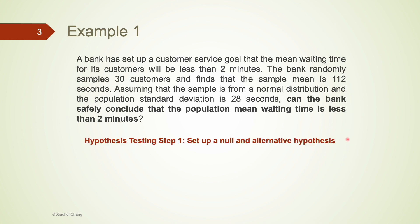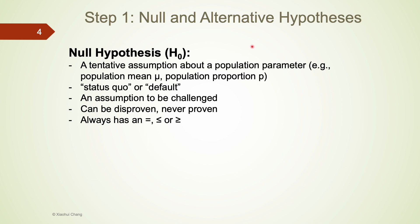The first step for any hypothesis testing is to set up the question. We do this by creating a null hypothesis — the assumption that we are looking to check or disprove — and its mirror, the alternative hypothesis, which we are looking for the evidence to support. The null hypothesis and alternative hypothesis are two statements that are completely opposite of each other. They are statements about the population parameters, for example, mu for population mean or p for population proportion. The null hypothesis is written as H0. It is an assumption to be challenged — usually the status quo or default. In hypothesis testing, we are looking for evidence to disprove or reject the null. We can never have enough evidence to approve it or accept it.